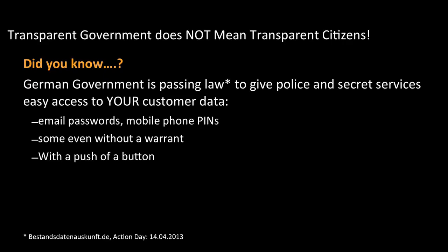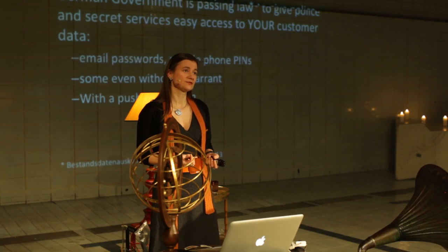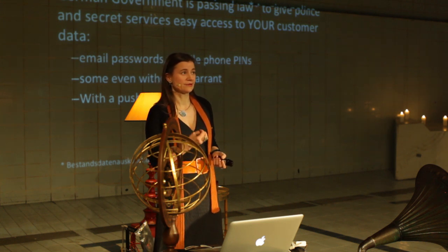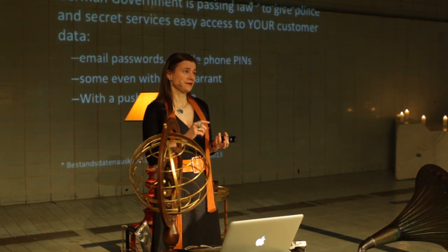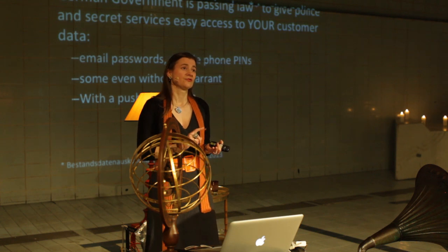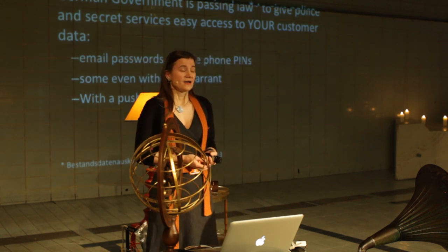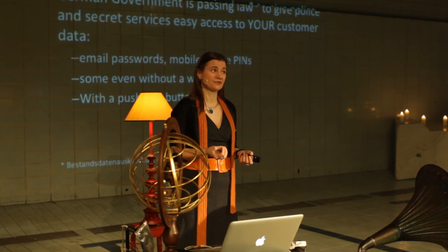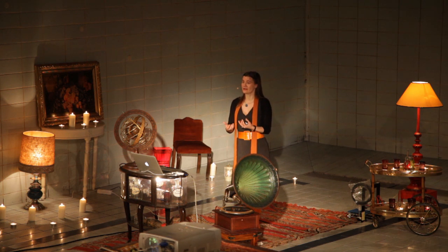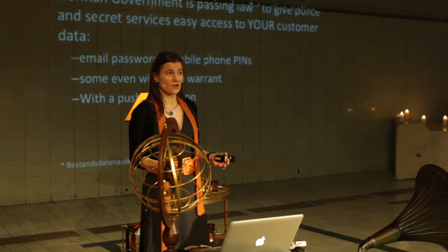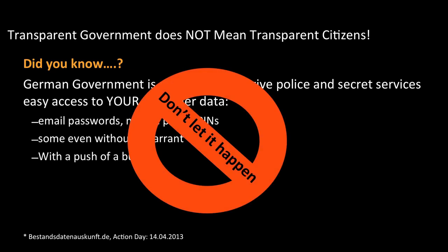Bad legislation happens all the time and we can't be alert enough. Right now, in these weeks still in April, the German government is planning to pass a law called Bestandsdaten-Auskunft, which would give police and the secret service unprecedented, super-easy access to your individual personal private data on the internet and communications. They can get your name, address, bank details, your email password, your mobile phone PIN — basically everything. Some of that data they can even get without a judge's warrant, with the push of a button via an electronic interface. If you don't like that, and I hope you despise it, then help prevent it. April 14th is an action day all over Germany.